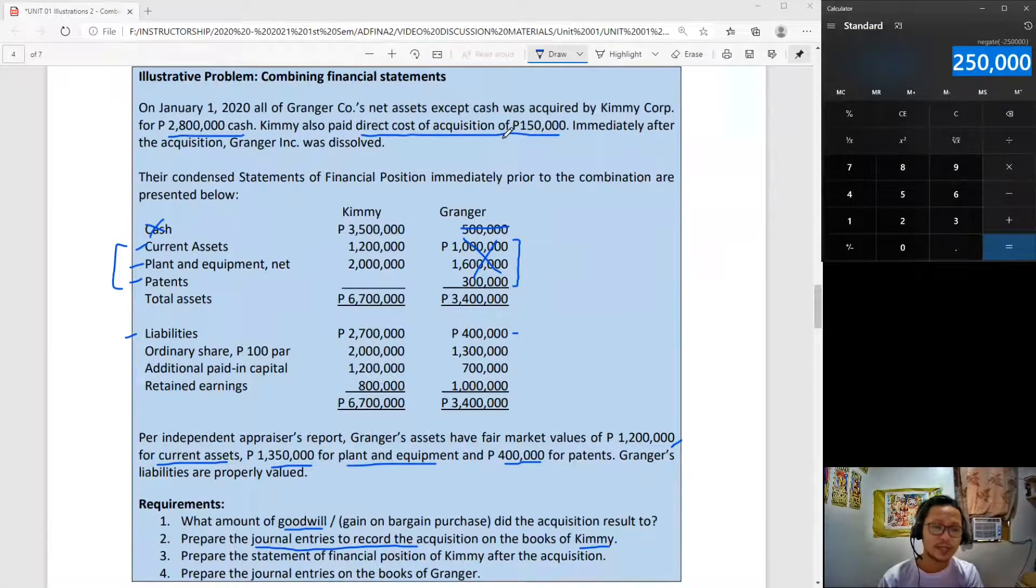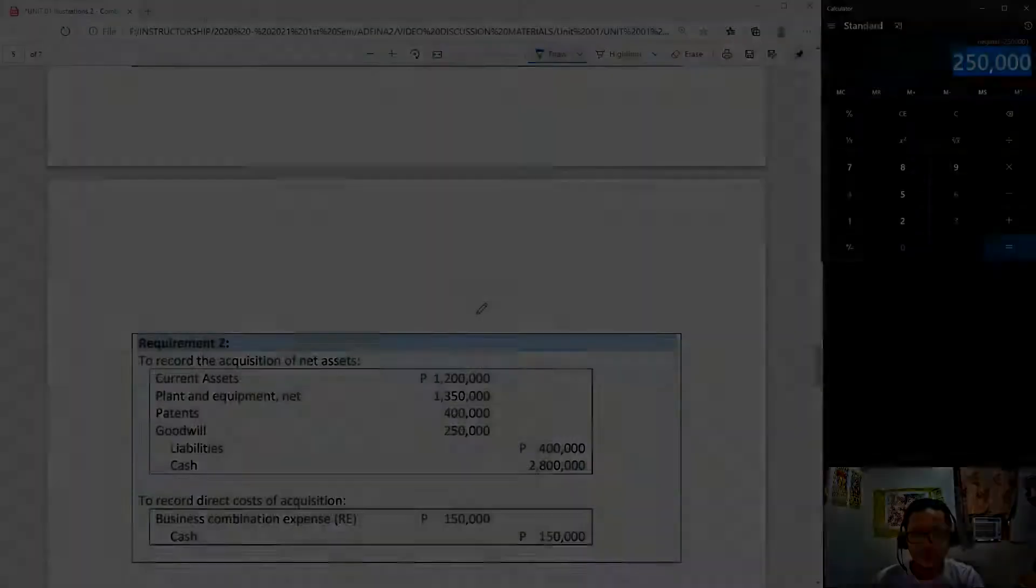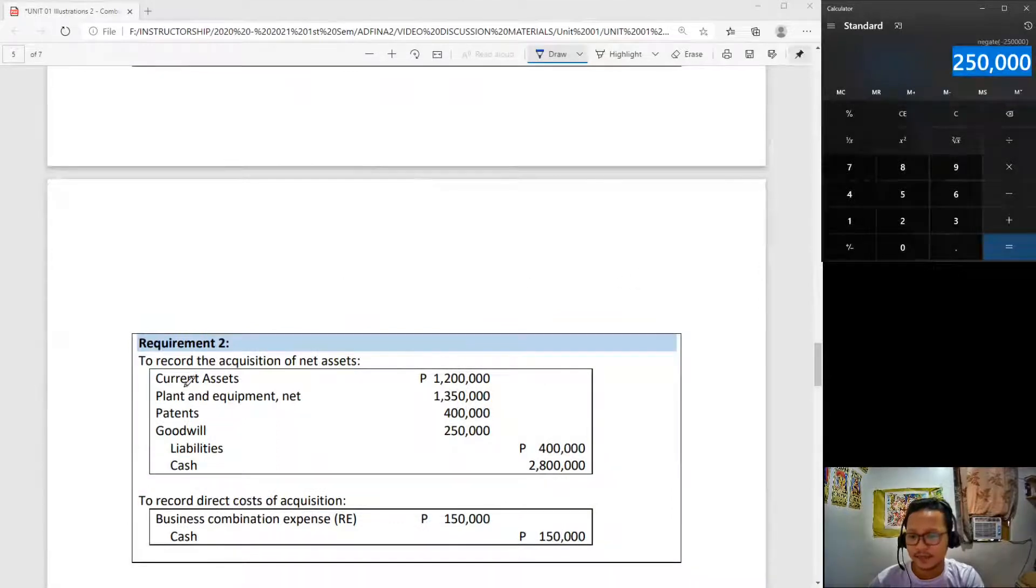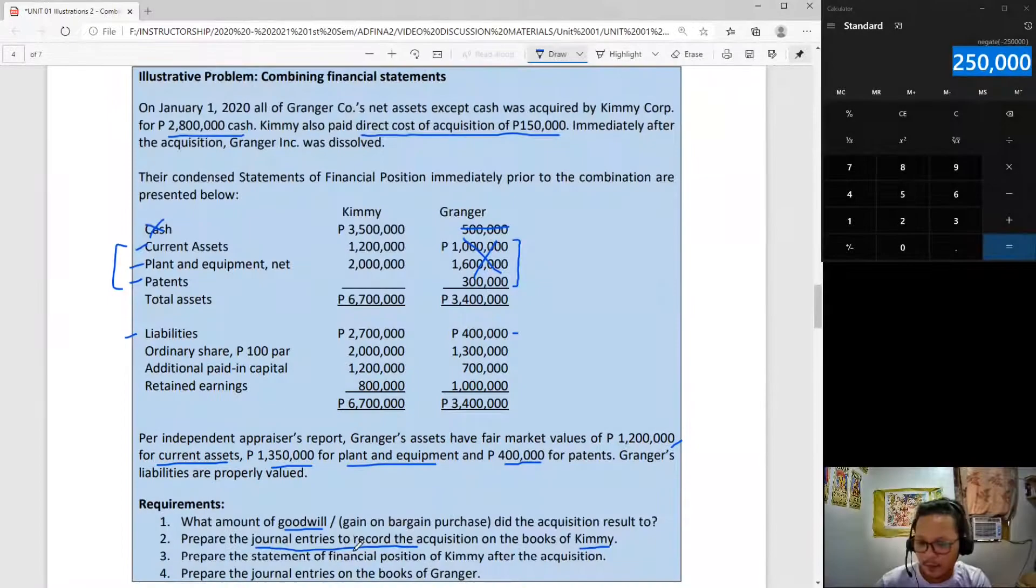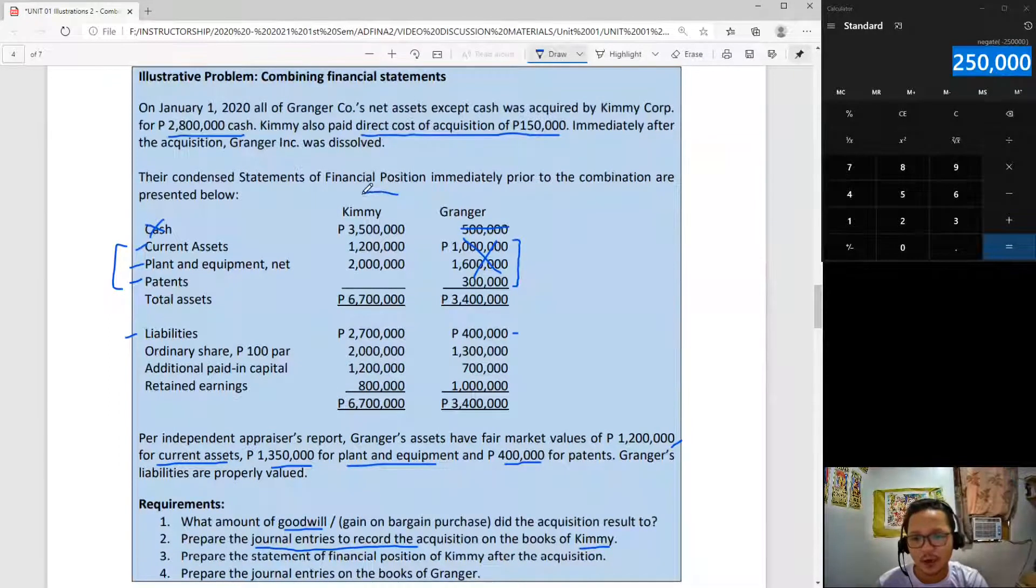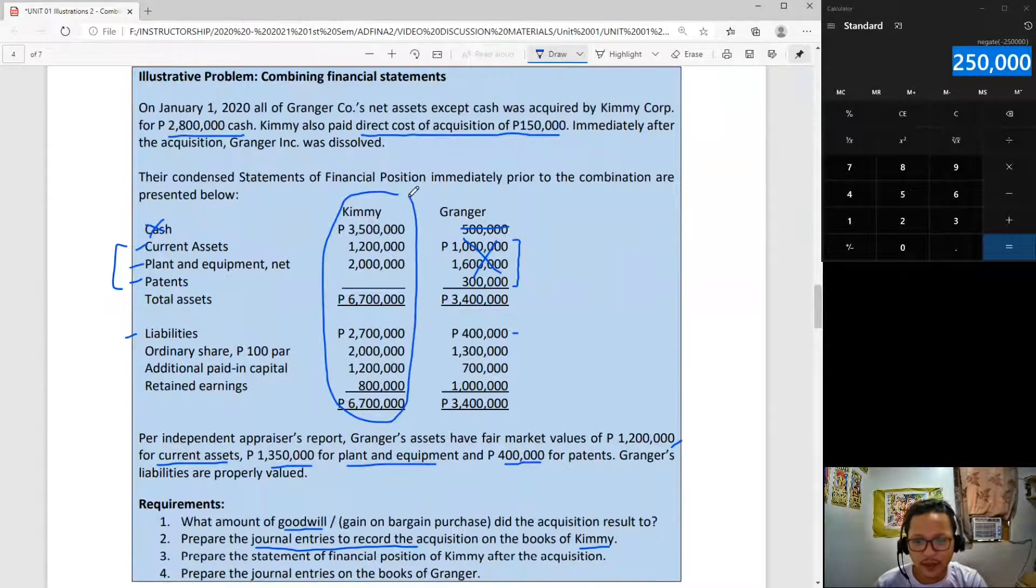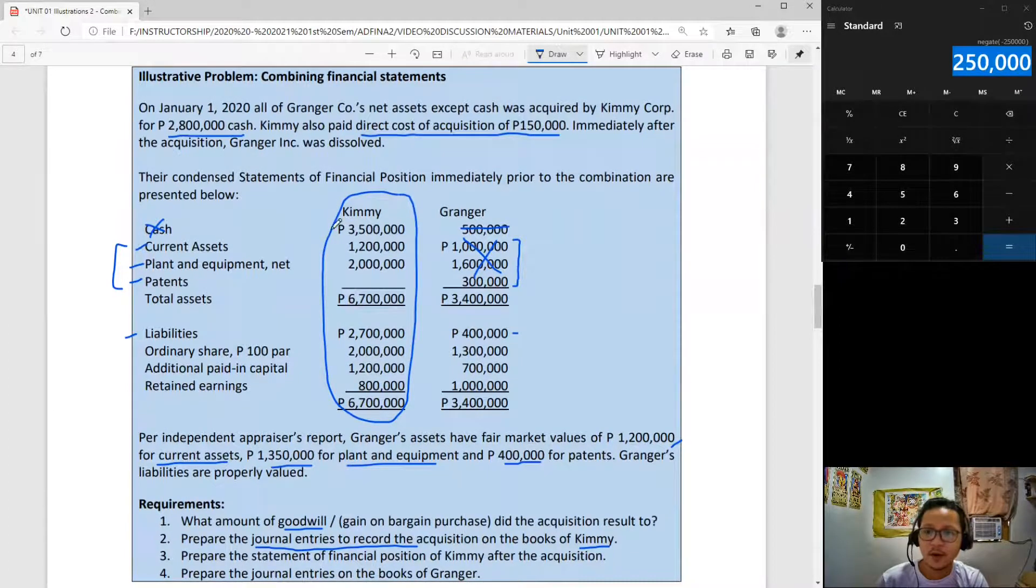All in all, your entries should look like this. As I mentioned earlier, one by one - you can just pause the video if you want to examine more of this. We will now be moving on to the next requirement, preparation of the statement of financial position of Kimi. We will use all of these amounts. Take note these amounts are on the date of acquisition, January 1, 2020.